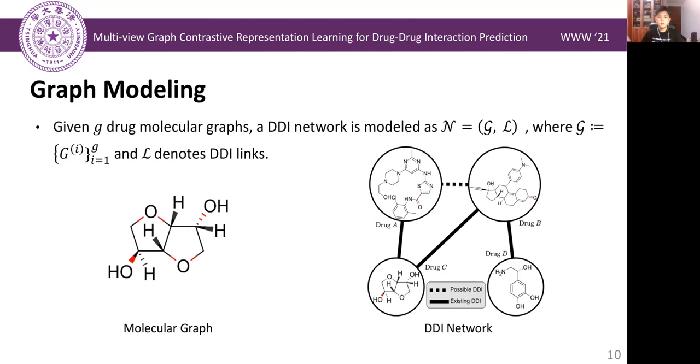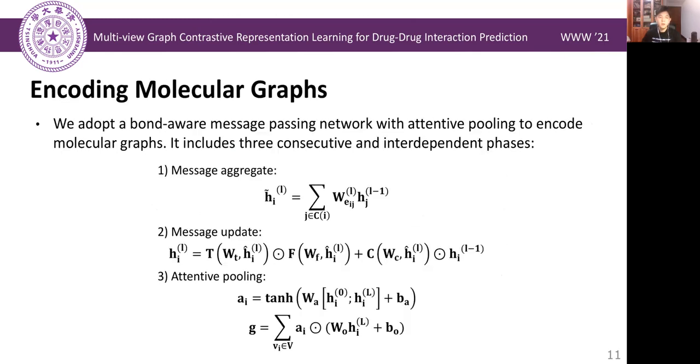We first model drug-drug interactions in a multi-view graph setting. We treat each drug as a molecular graph and interaction relationships as a DDI network. Then, we adopt a bond-aware message passing neural network with attentive pooling to encode molecular graphs. It includes three consecutive phases.